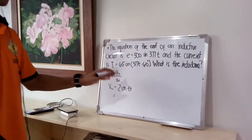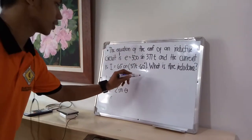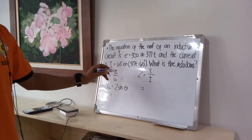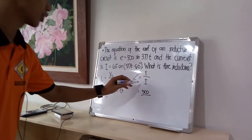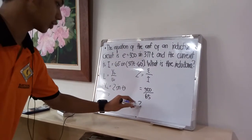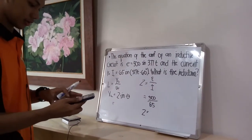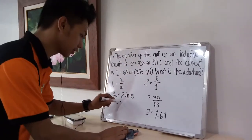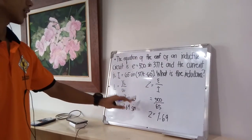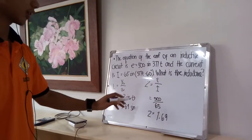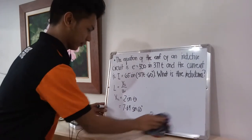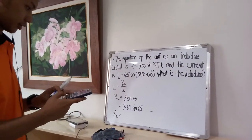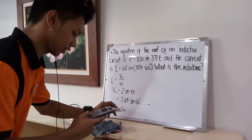We don't have our impedance yet, so we'll get it first. Impedance equals total voltage over total current, which is 500 over 65, giving us a total impedance of 7.69. Now we can plug this in: X sub L equals 7.69 times sine of 60 degrees — we use positive 60 degrees because we don't have negative impedance.